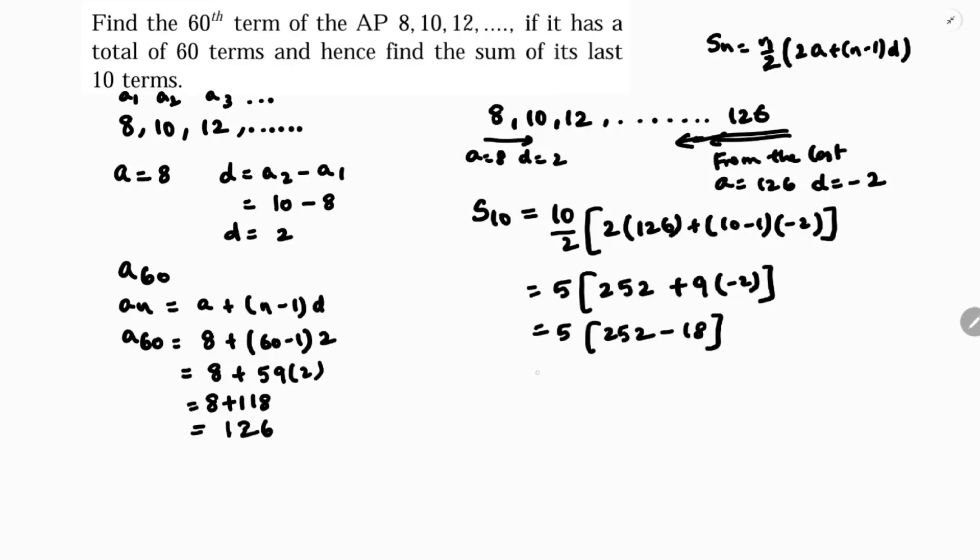252 minus 18 is 234. So 5 times 234, if you multiply with 5, we will get 1170. So sum of last 10 terms is 1170.